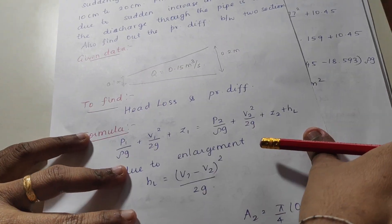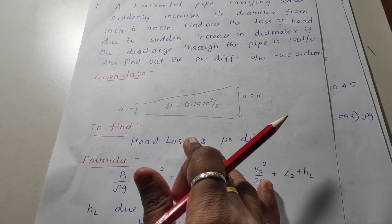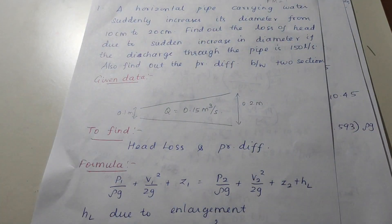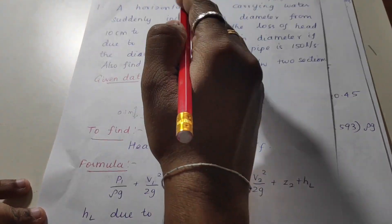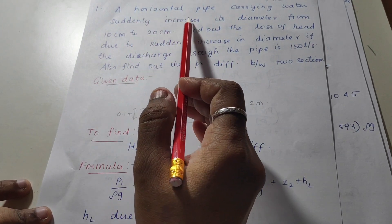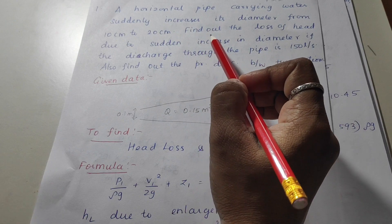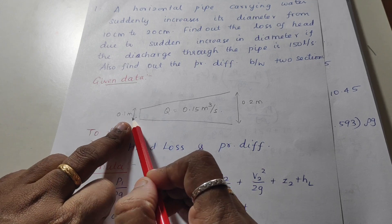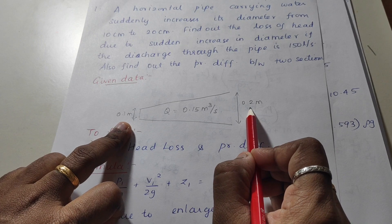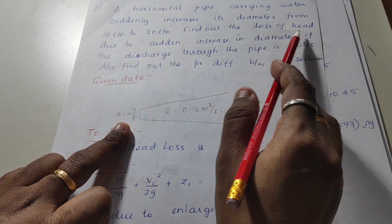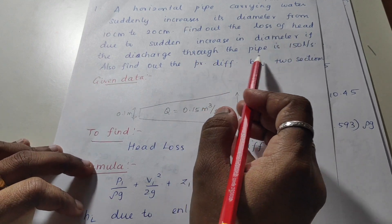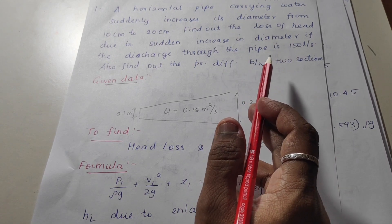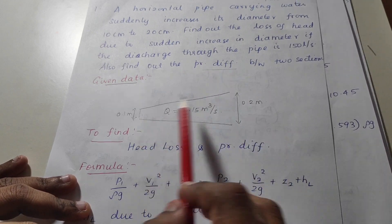The next is a part C problem — FM10, KTU December 2018 part C problem. A horizontal pipe carrying water suddenly increases its diameter from 10 centimeter (0.1 m) to 20 centimeter (0.2 m). Find the loss of head due to the sudden increase in diameter if the discharge is 150 liters per second, that is 0.15 cubic meters per second. We also need to find the pressure difference between the two sections.